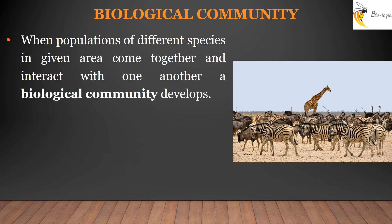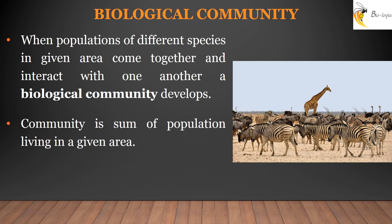A biological community develops when different species come together in a given area and interact with each other. Interactions may be negative, positive, or even neutral. In a given community, some species may be dominant and more abundant than others. A forest with trees, birds, insects, monkeys, and tigers represents a biological community.